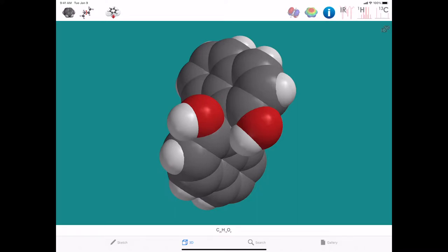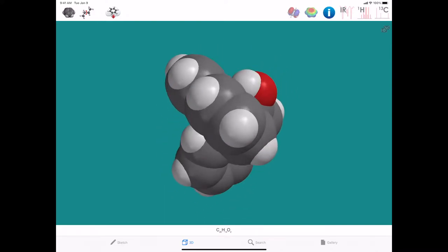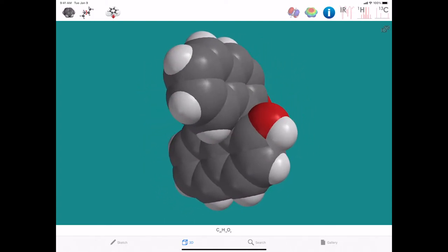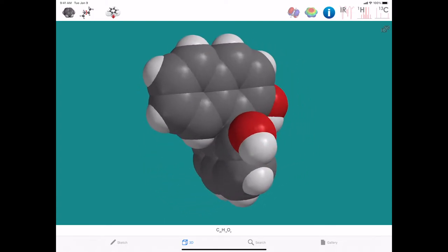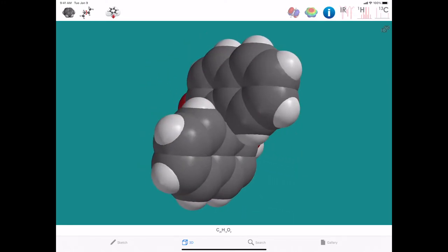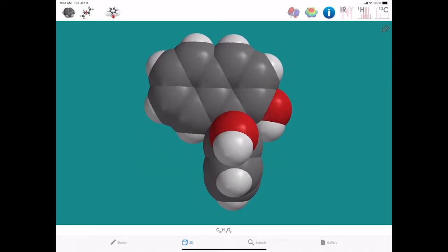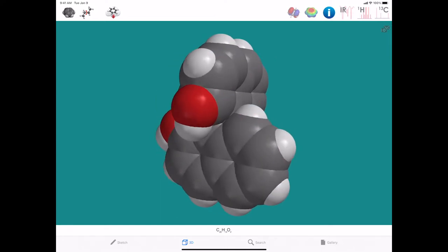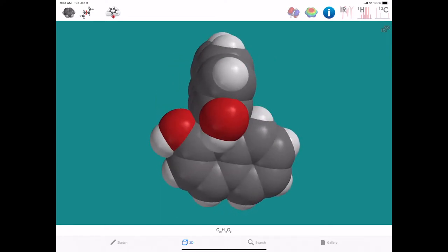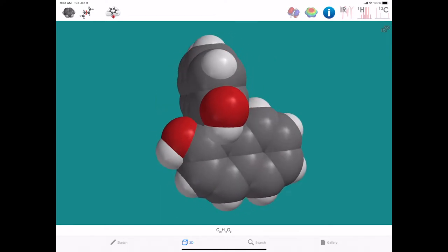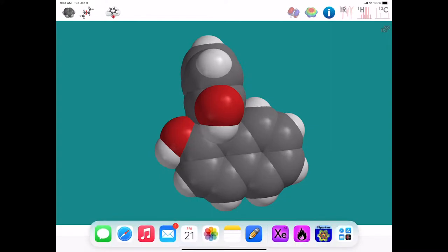You can see in the space-filling model that if I were to try to make this flat, this is going to bump into that, and this is going to bump into that. In other words, it's stuck. Now, presumably at a high enough temperature, if you give the molecule enough kinetic energy, you may be able to get around that rotational barrier. But for molecules like this, biaryls or biphenyls, the rate of rotation is slow enough that you can actually isolate the two different enantiomers.